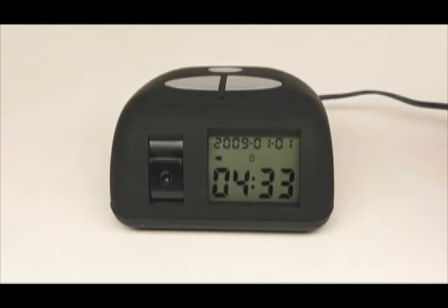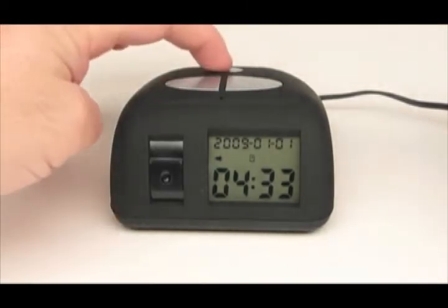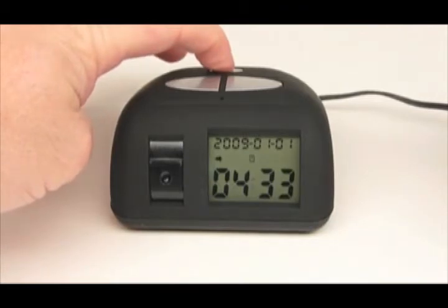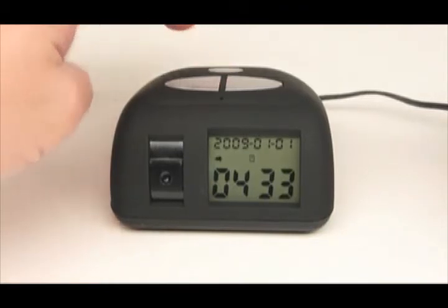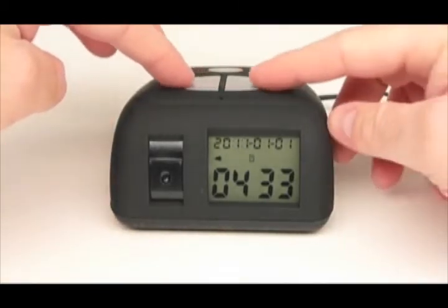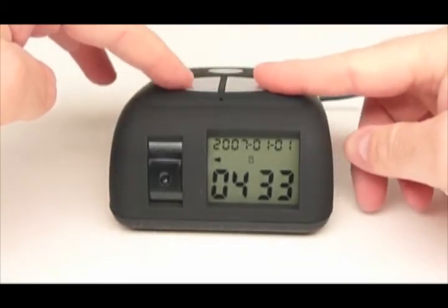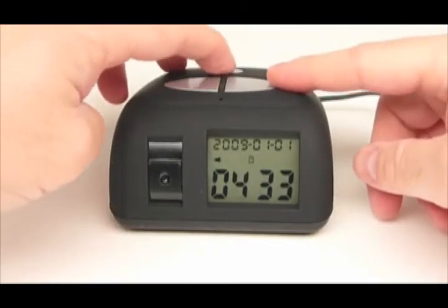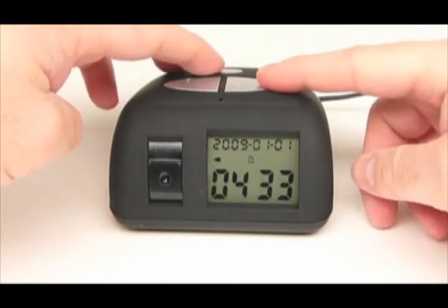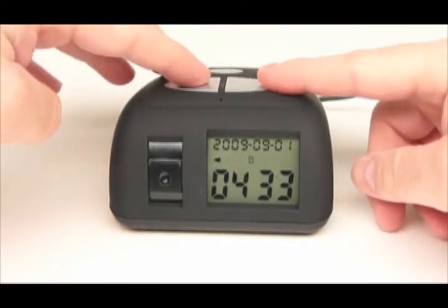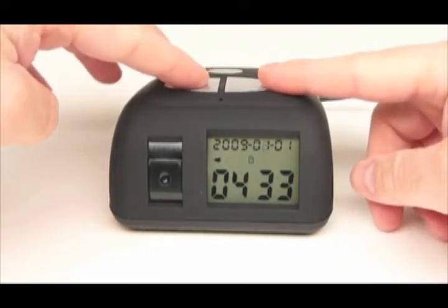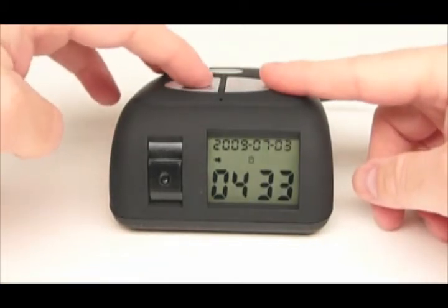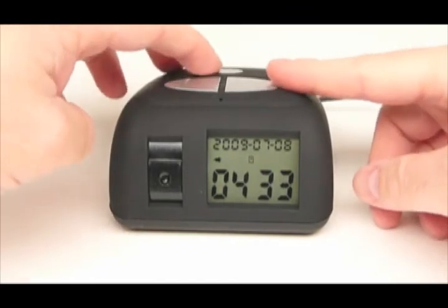To set the time and date on the new mini color spy camera, you'll hold down the mode button for about 5 seconds or so until the year starts flashing. You have forward and reverse, go to 09. The month will start flashing and we'll go to seven, hitting the mode button again, and we'll put an 8 in there.